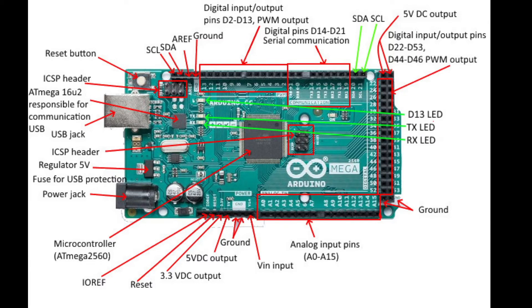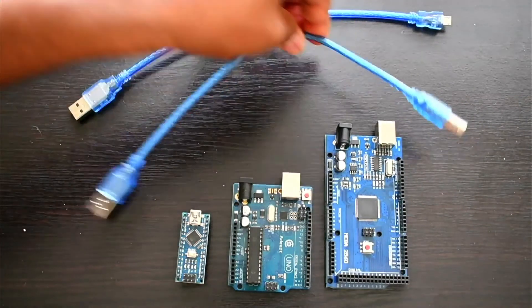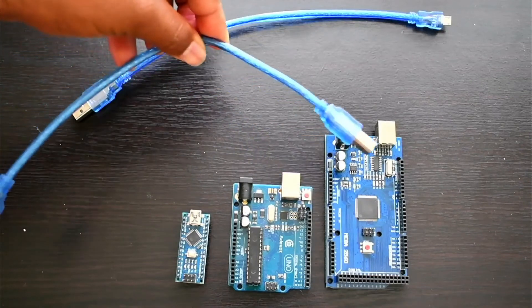We have pin numbers 0 to 53 for digital communication, with PWM pins also in between. We have the same 0 and 1 for RX and TX. We have SDA and SCL as well. We have 5V and 3.3V power, GND, and an external power jack for plugging in a 12V power supply directly. It uses the same Type-B connector as the Arduino Uno to connect to the computer.